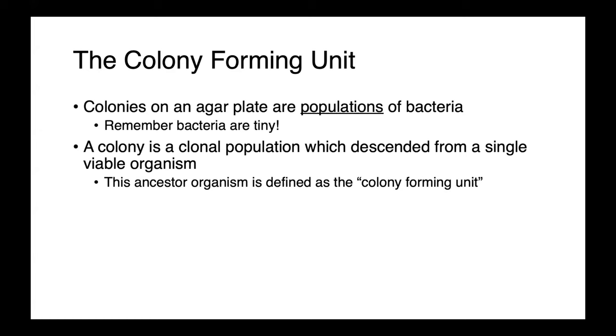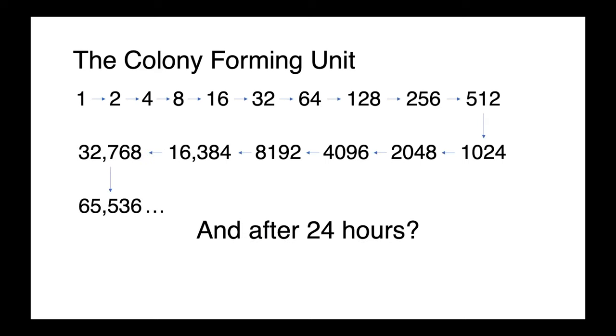So how do we go from one colony-forming unit, which is invisible, to a colony that we can actually see with our naked eye? Well, if we consider a single colony-forming unit allowed to grow without any restrictions, doubling every 20 minutes, that population is going to grow quite rapidly. And after 24 hours, we're going to have an astronomical number of organisms that are certainly going to be visible to the naked eye.